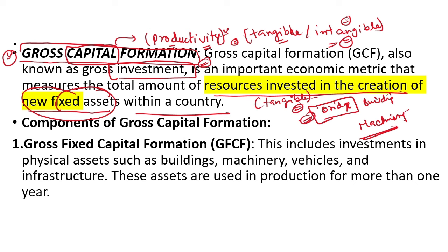Where new infrastructure is set up, tomorrow there will be companies that increase productivity in the country. If you bring machinery, it will produce things and generate income. All the resources we place so that our productivity increases tomorrow — investing resources in the creation of new fixed assets within a country — that is the total Gross Capital Formation.